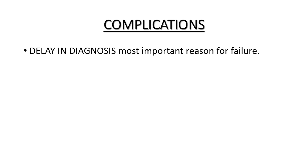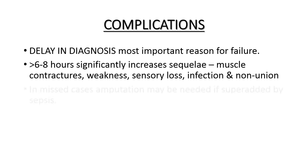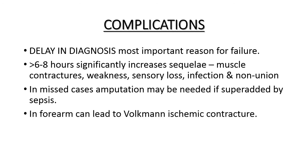The most important reason for failure is delayed or missed diagnosis, which commonly occurs in polytrauma patients. A perfusion pressure of less than 30 mmHg lasting more than six to eight hours significantly increases sequelae and leads to poor prognosis. Sequelae include muscle contractures, muscle weakness, sensory loss, infection, and non-union of fractures. In missed cases, systemic sepsis may develop necessitating amputation. In the forearm, missed cases quite commonly lead to Volkmann's ischemic contracture.